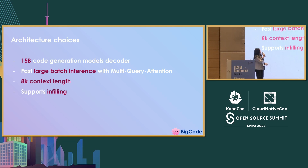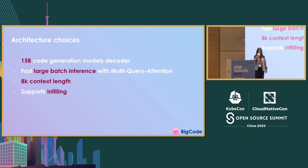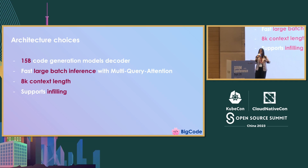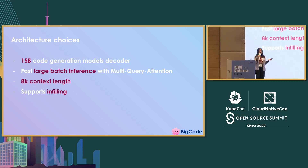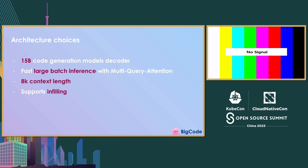Now let's talk about training. Regarding the architecture choices, we went for a 15 billion parameter code generation model, and we added a feature called multi-query attention, which makes inference on large batches much faster. We also used an 8,000 token context length, which allows you to fit a lot of code in your model's context. This is very useful in a VS Code extension — if you want to add context from other files that are not the one you're working on, it's very important to have a large context so you can add more information and your predictions become better. The last thing the model supports is infilling. Since this model is a decoder model like GPT-2 or GPT-3, it processes text from left to right, but in code sometimes you want to modify something inside — for example, add a docstring to a function. StarCoder supports that with a feature called fill-in-the-middle.